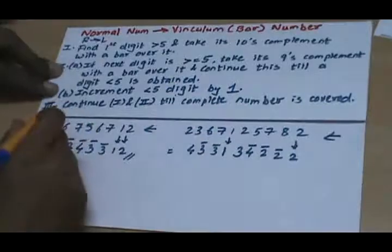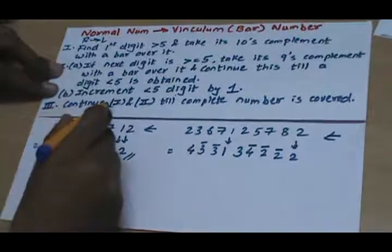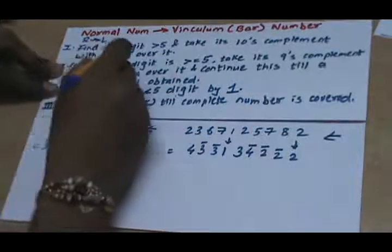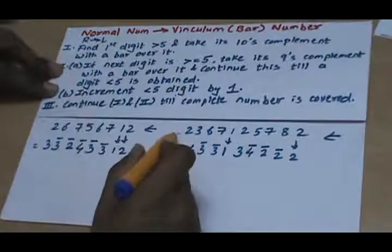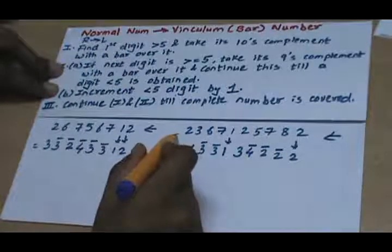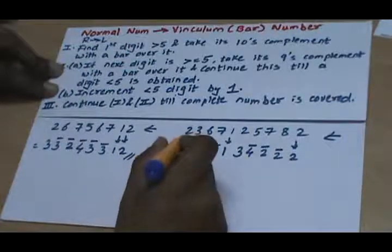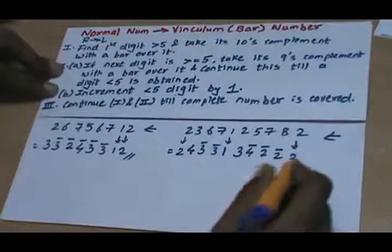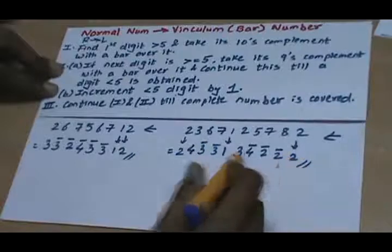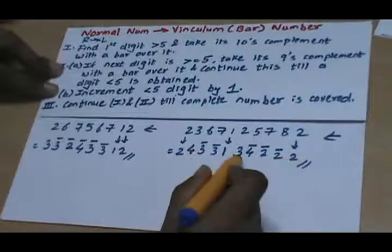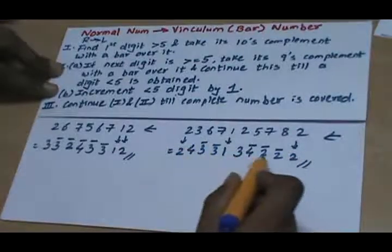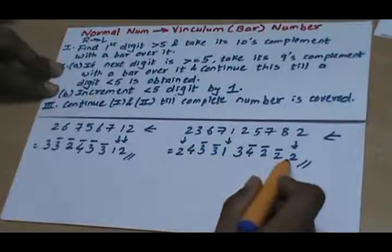We go to step 3, which says continue with step 1. There are no digits left which are greater than 5, so we write 2 as it is. This is your Vinculum number, which does not have any digit greater than 5.